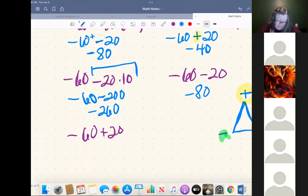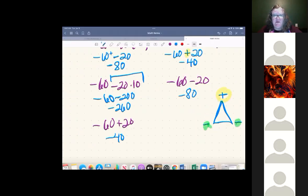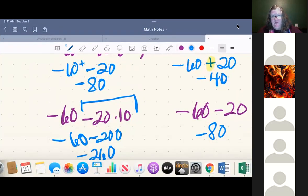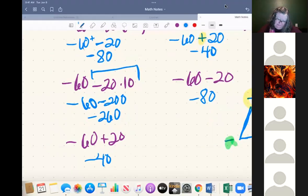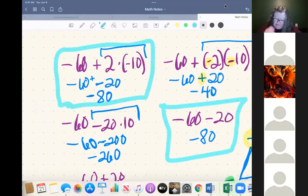And negative 60 plus 20 is negative 40. So the two correct answers in this scenario are the two that show where Tommy was 10 minutes ago. So what are our right answers here? Negative 80. Negative 80.